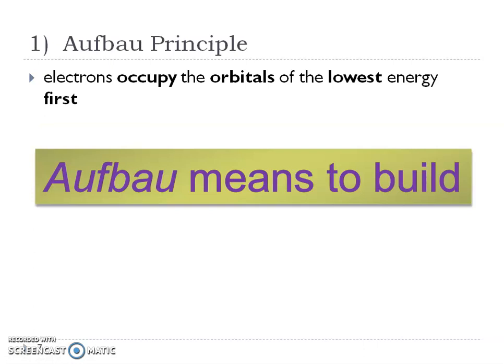The first rule, the Aufbau principle, is that electrons occupy the orbitals of the lowest energy first. The first electron in an atom is going to occupy the very lowest energy first. Aufbau means 'to build,' which makes sense — you always start at the lowest or smallest and build up from there.